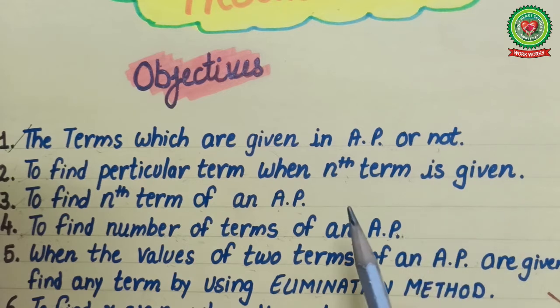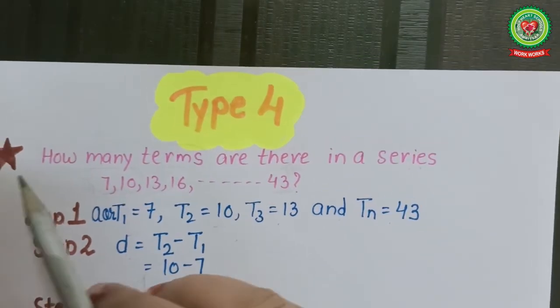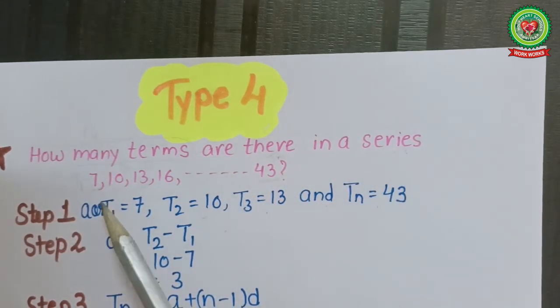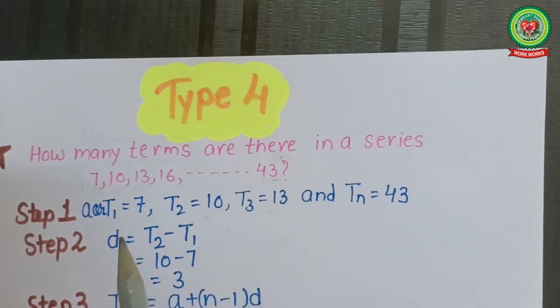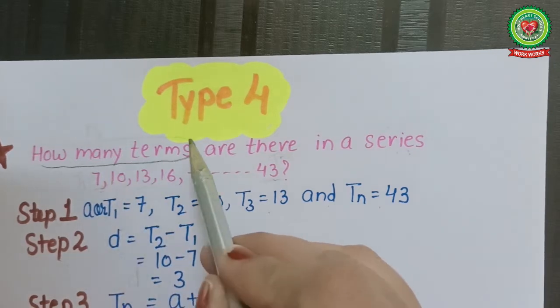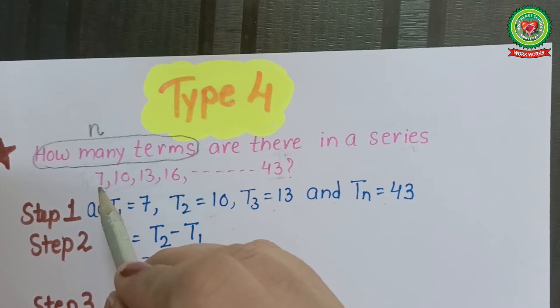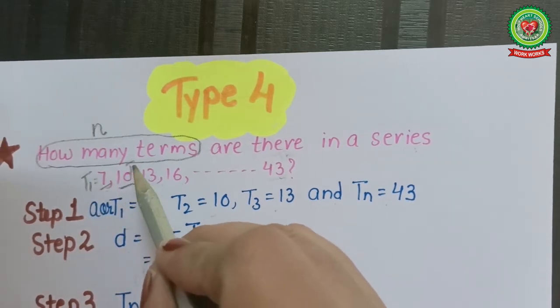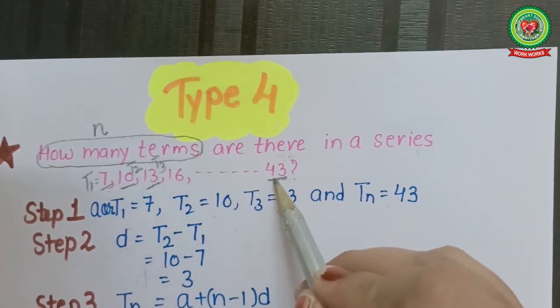We will discuss this type with an example. The problem statement is: how many terms are there in the series 7, 10, 13, 16, and so on till 43? In this problem, what we have to find is how many terms, which means small n. What is given to us: t1 = 7, t2 = 10, t3 = 13, and the nth term tn = 43.